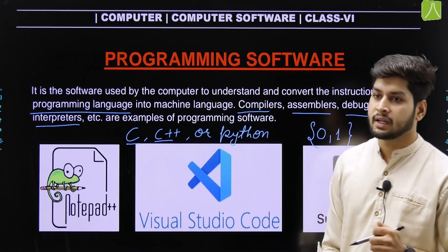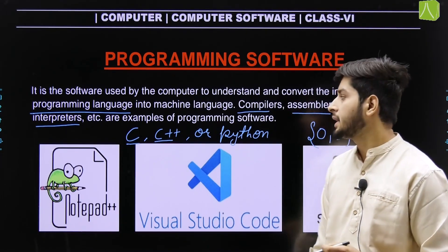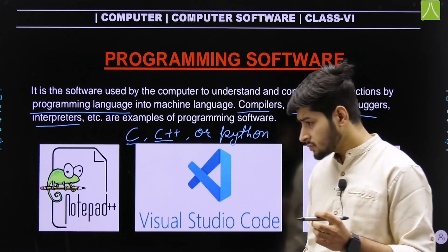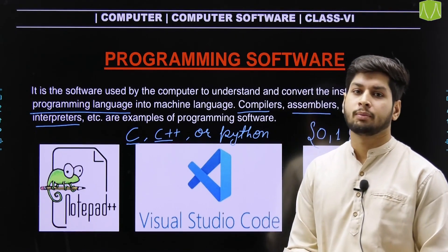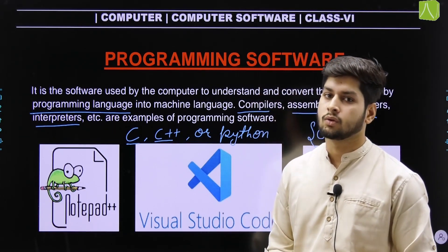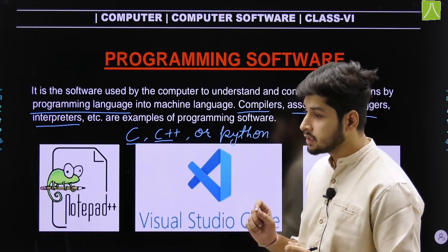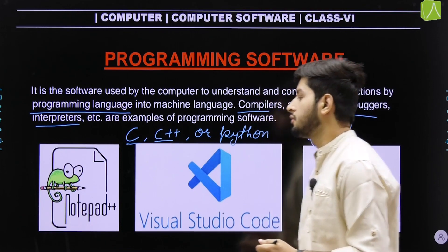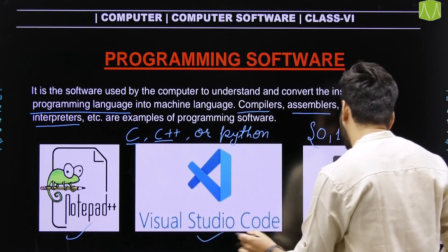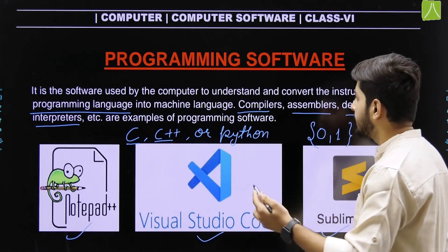An interpreter is also programming software. Unlike a compiler, which finds all errors at one time, an interpreter reads and executes programming code line by line, generating errors as it goes. Notepad++, Visual Studio Code, and Sublime Text Editor are examples of programming software and interpreters.